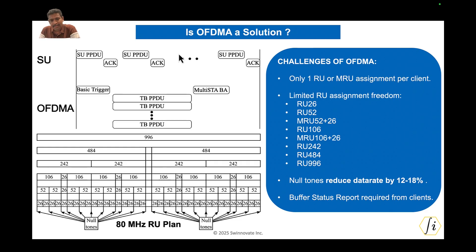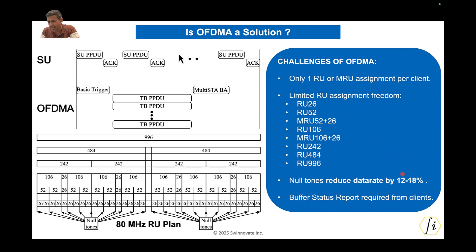Another challenge is that when we assign multiple RUs, we are splitting 80 MHz into smaller chunks of bandwidth. There are so-called null tones or null subcarriers that are introduced as per the RU plan. The more you subdivide the 80 MHz into smaller and smaller chunks, the more subcarriers are lost to null subcarriers that cannot be used for sending data. Null tones reduce the data rate anywhere from 5 percent to 18 percent — the more typical number being 12 to 18 percent. This is a significant limiting factor of OFDMA.